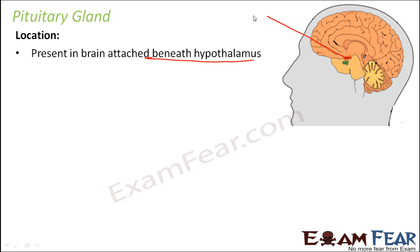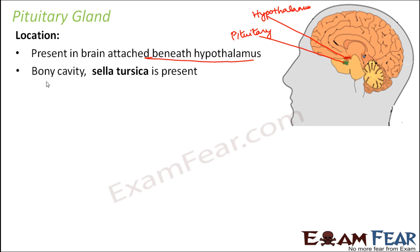Here you can see the red structure is the hypothalamus, and just below it is the green colored structure which is the pituitary gland. This pituitary gland is present inside a bony cavity called the sella turcica — similar to how the brain is enclosed in the skull. The question is how is the pituitary gland attached to the hypothalamus? They are connected to each other with the help of a stalk-like structure, also called the pituitary stalk.